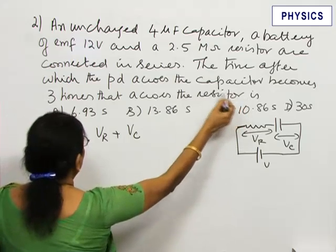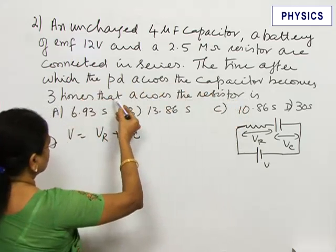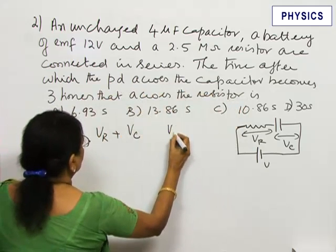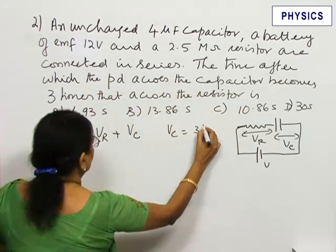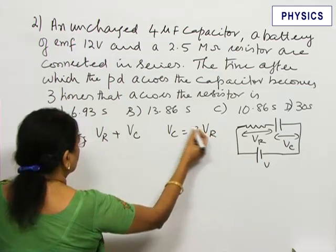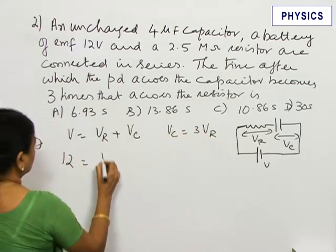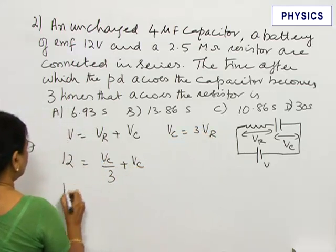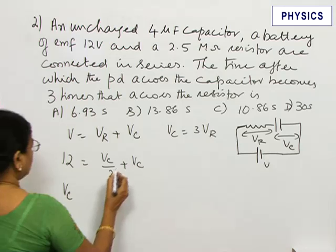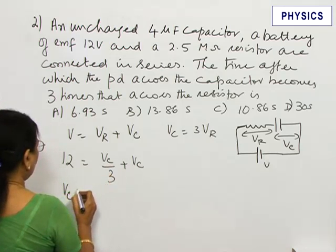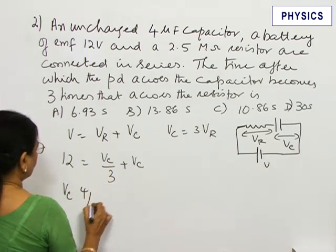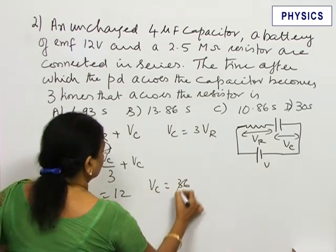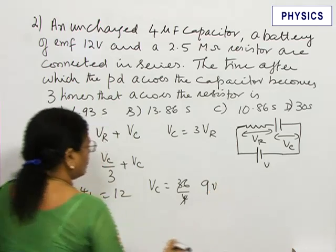We want to know when the potential across capacitor becomes 3 times that across the resistance. Vc equals 3Vr or Vr equals Vc by 3. Substituting Vc by 3 plus Vc we get Vc into 4 by 3 equals 12 or Vc equals 36 by 4, 9 volt.